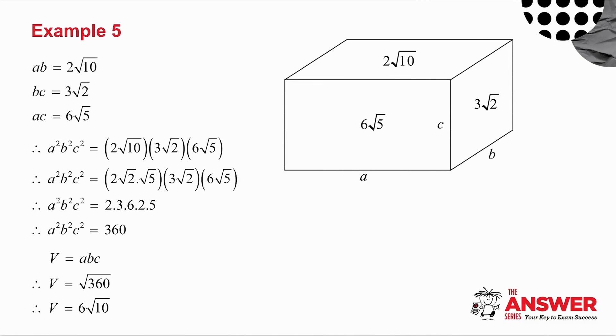So what we've got is the following. A times B is 2 root 10. B times C is 3 root 2. And A times C is 6 root 5. So what I can do is the following. I can take AB, BC, and AC, and I can multiply them. And I get A squared, B squared, C squared. Which means it's equal to the product of these three. Root 10 I can write as root 2 times root 5. Root 2 times root 2 is 2. Root 5 times root 5 is 5. And I get that this is equal to 360.